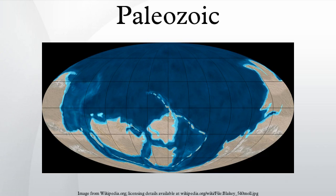Geologically, the Paleozoic starts shortly after the breakup of a supercontinent called Pannotia. Throughout the early Paleozoic, the Earth's landmass was broken up into a substantial number of continents. Towards the end of the era, the continents gathered together into a supercontinent called Pangaea, which included most of the Earth's land area.